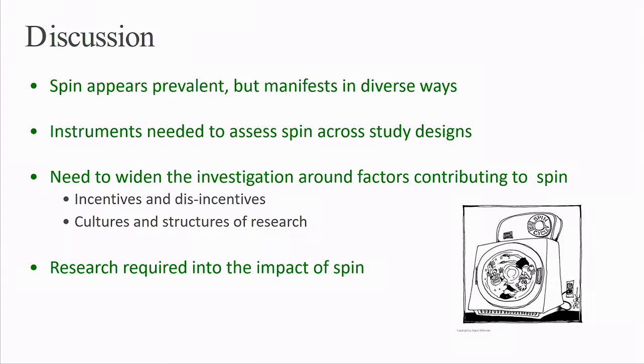SPIN appears to be prevalent, particularly in clinical trials, and manifests in diverse ways. This thematic analysis could underpin the development of instruments to assess SPIN across study designs and clinical areas — useful for researchers assessing their own work, as well as for peer reviewers and editors. We suggest widening the investigation into factors associated with SPIN beyond highly individualized or article-specific factors, looking instead at the cultures and structures around research. Very little is known about these contextual factors or what might be done about them, and even less is understood about the impact of SPIN on research, clinical practice, or the policy environment.